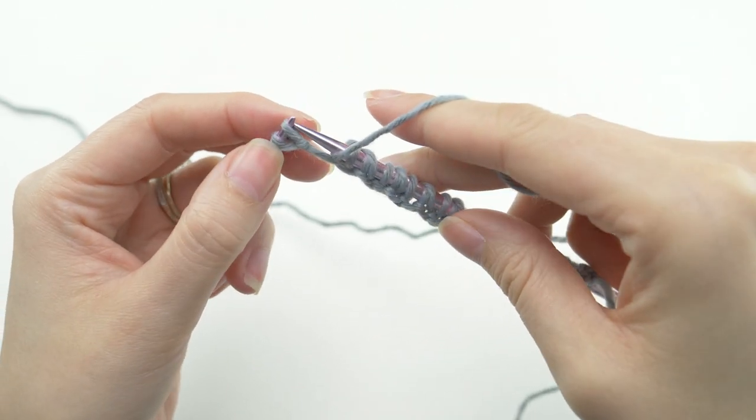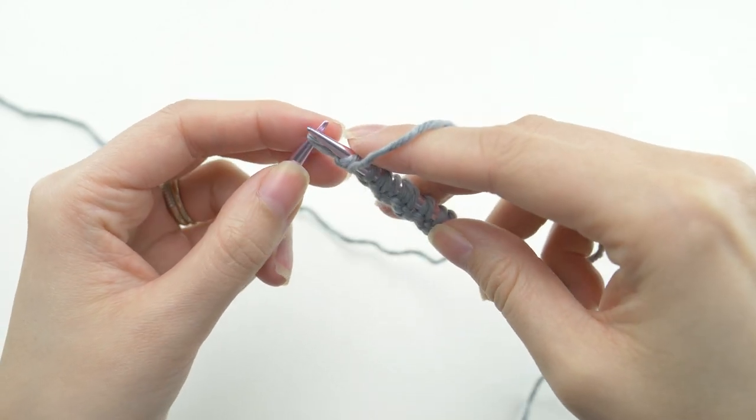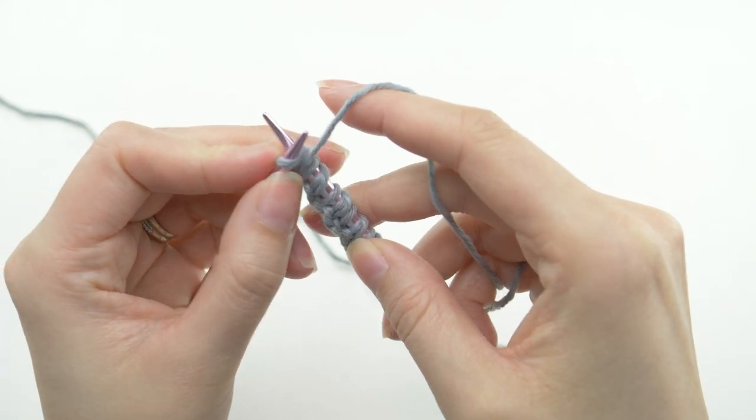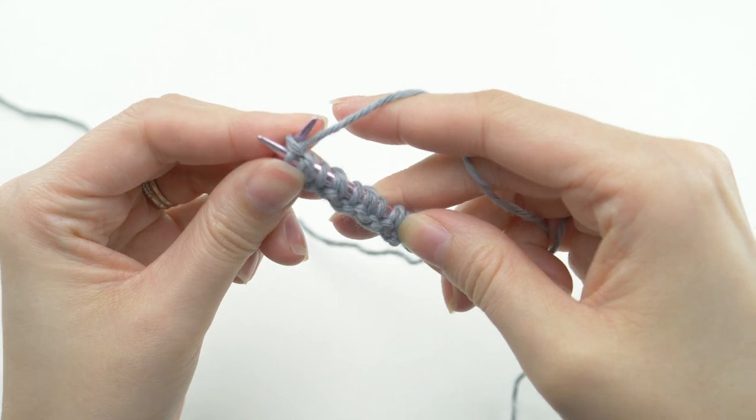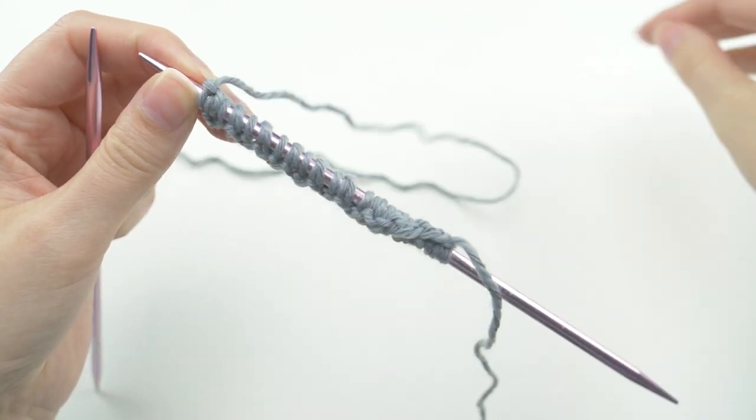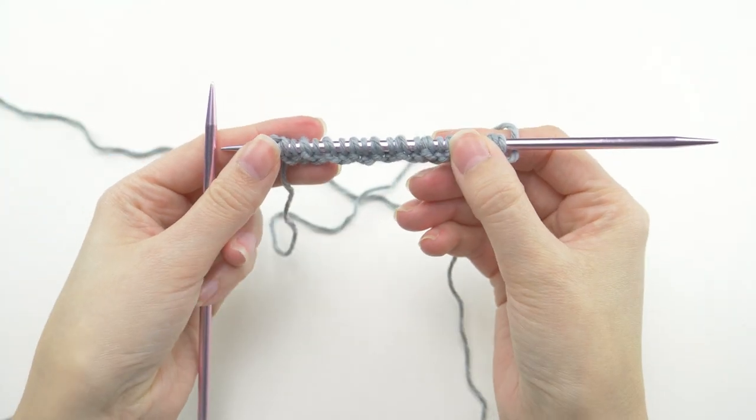Your second-to-last stitch should be a slip one purlwise for this row. And then, you'll knit the last stitch with the yarn forward. Again, your last stitch will always be a knit throughout this pattern.